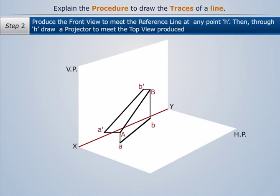In the second step, we produce the front view to meet the reference line at point H. Then, through H we draw a projector to meet the top view produced.